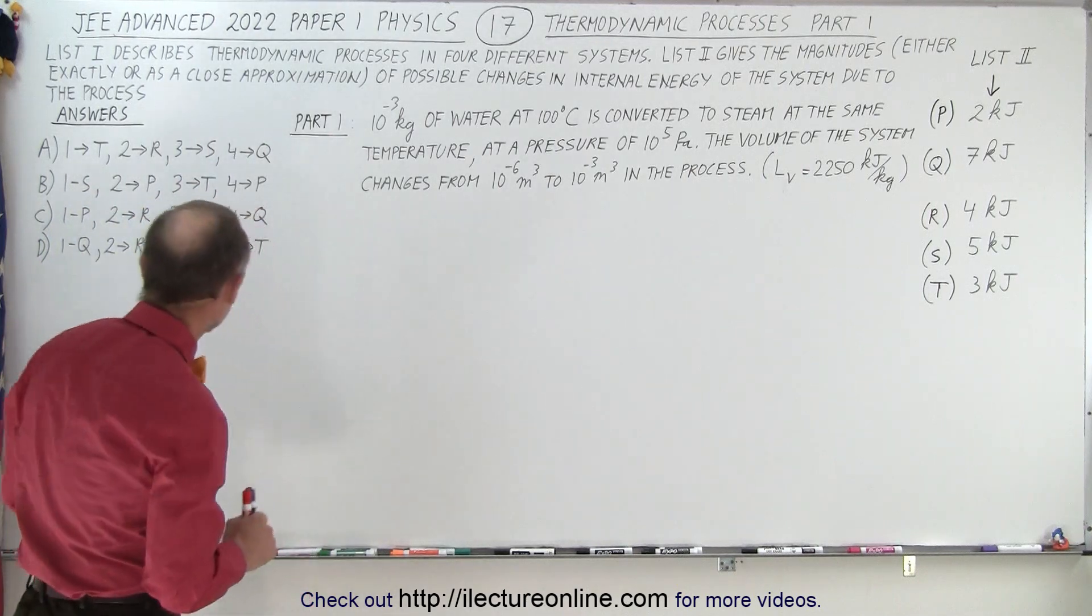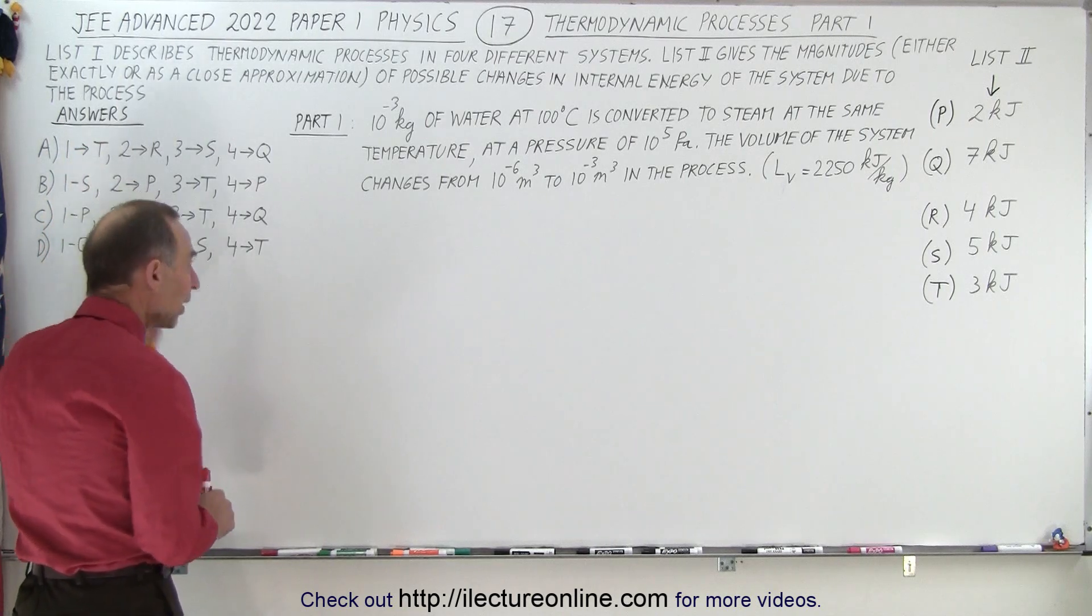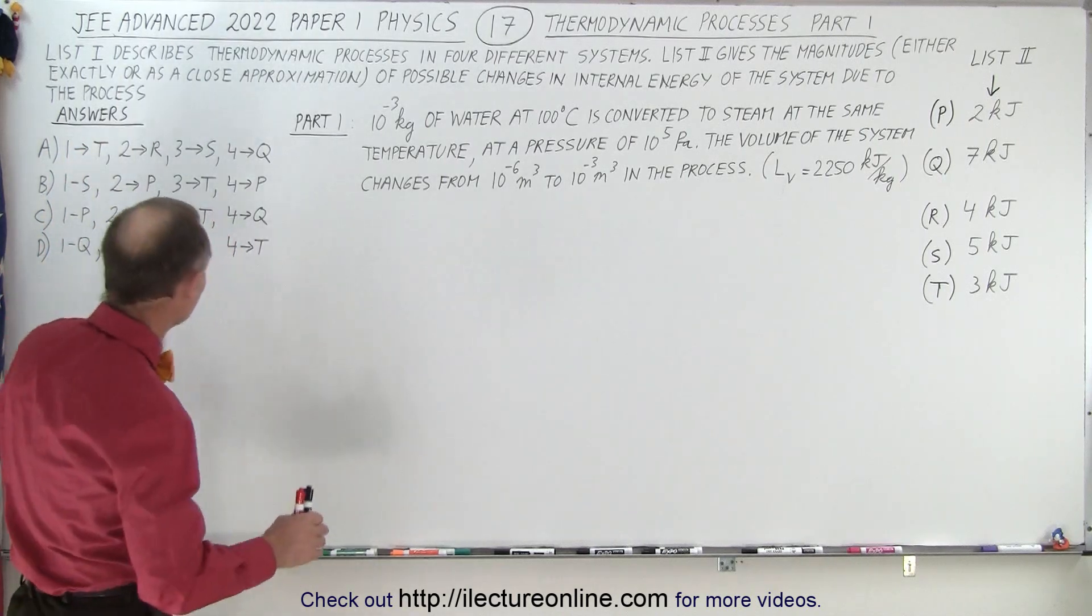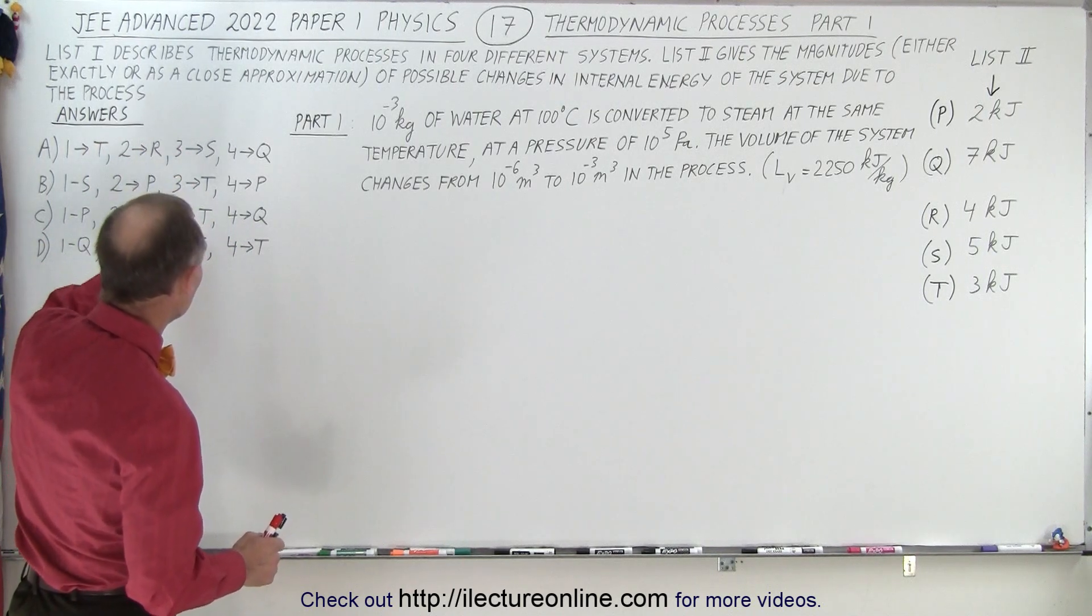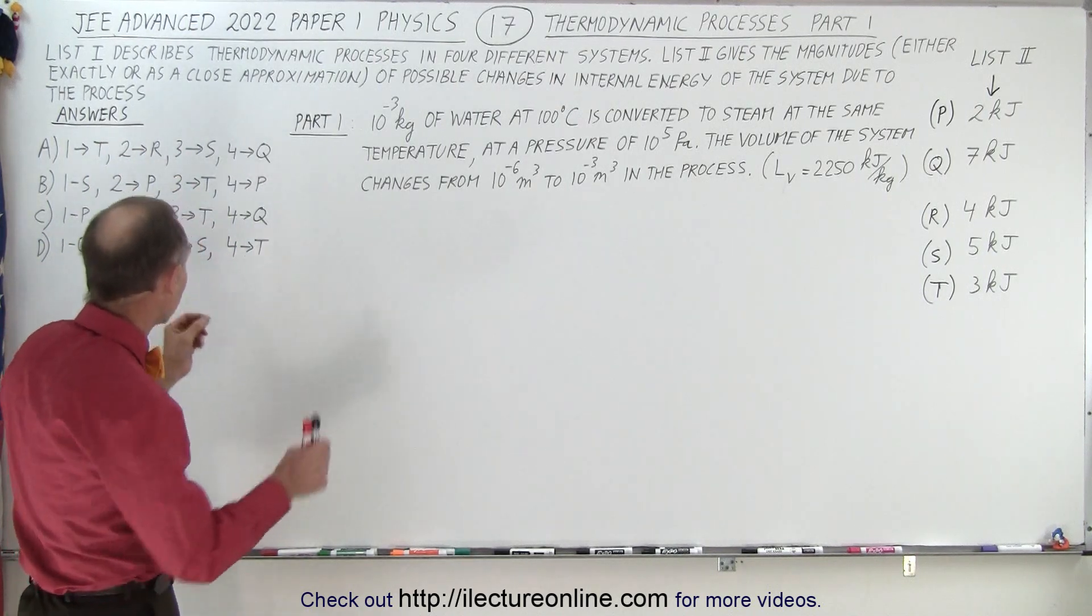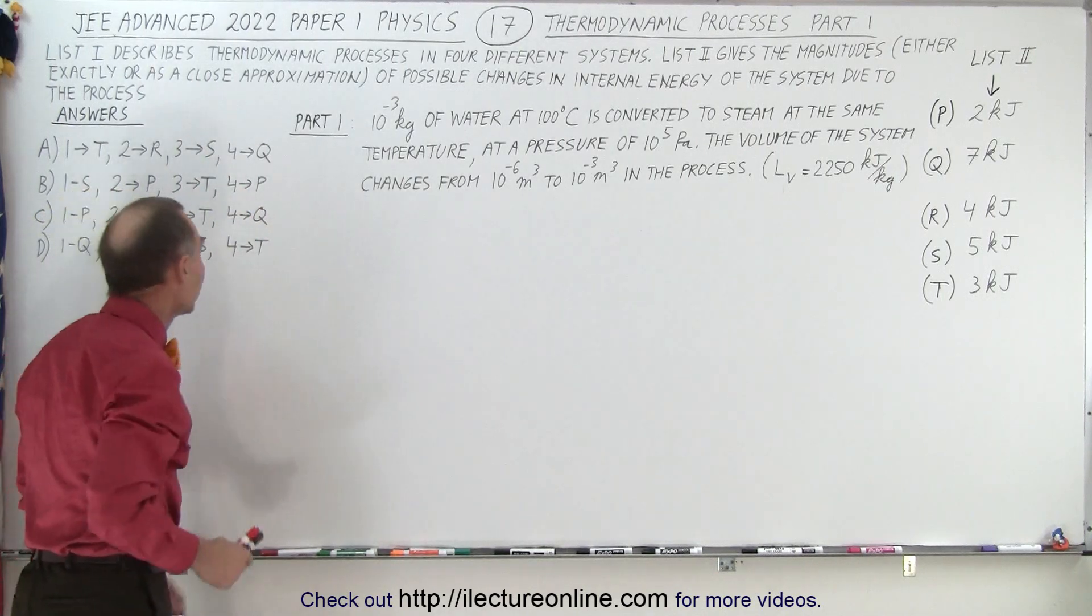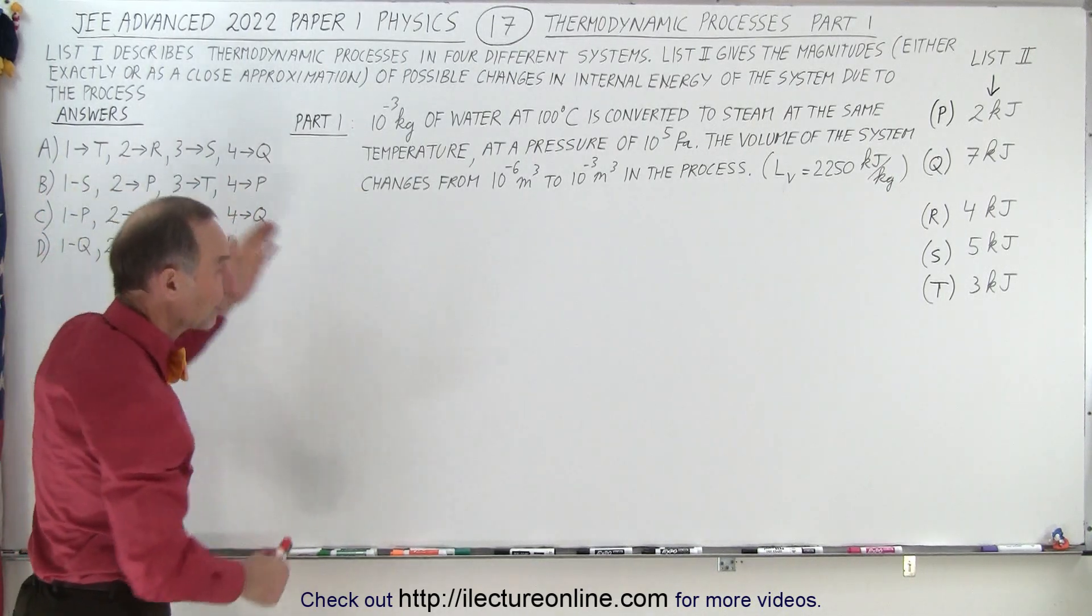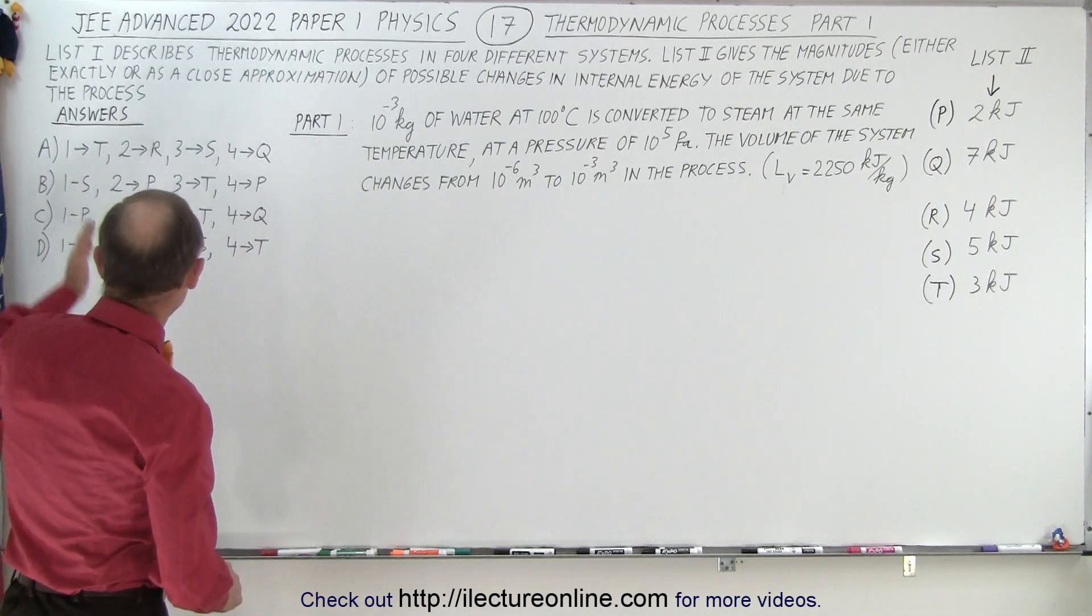What's interesting is that only for part 1 do we have four different possible answers. In the other answers, you can have R three times and T twice, S twice. So even if you did part 3 first and got T, it wouldn't tell you if it's answer B or C.